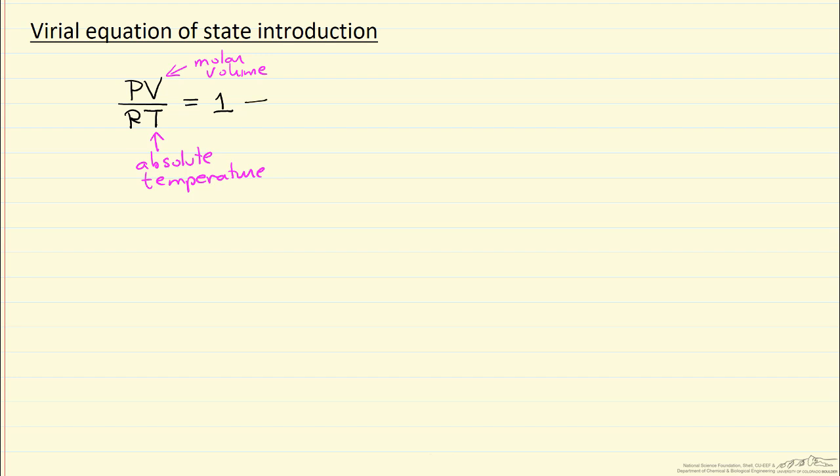The Virial equation then has additional terms, where this term B is the second Virial coefficient, and of course C is the third Virial coefficient, and so forth.